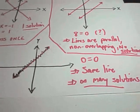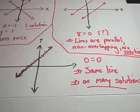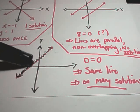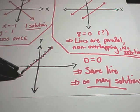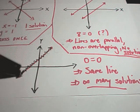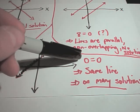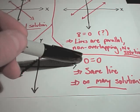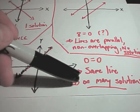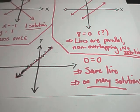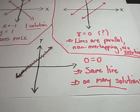The last case that can happen is you go to graph what looks like two different lines and they actually turn out to be the same line. Algebraically, you'll get a statement like 0 equals 0, and in that case it just means you have infinitely many solutions. So let's do a couple of these using substitution.